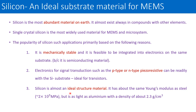The third point is that silicon is an almost ideal structural material — it is very strong. We measure material strength using Young's modulus, and silicon's Young's modulus is very high, comparable to that of steel, approximately 2 × 10⁵ megapascals. Additionally, the weight of silicon is very light — similar to aluminum — with a density of only 2.3 g/cm³. So it is both highly mechanically strong and very lightweight.